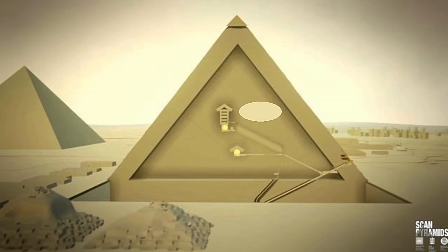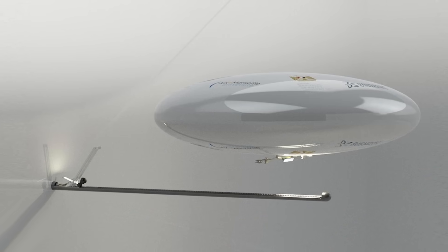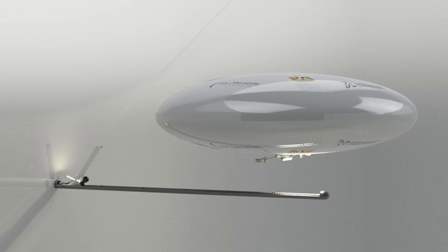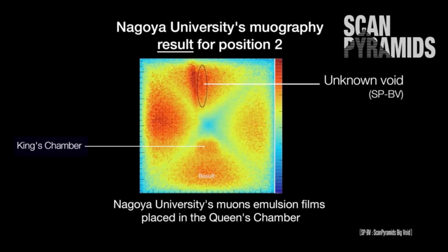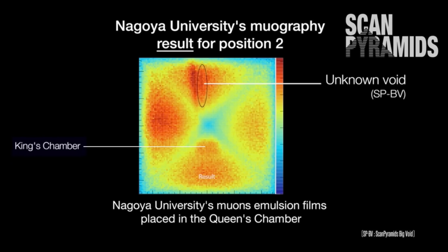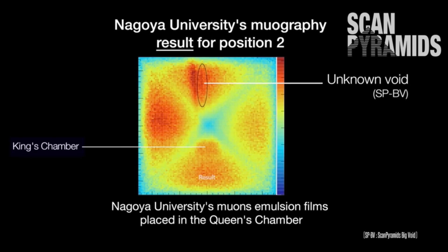Not long after the announcement of the big void, pictures of a new robotic blimp were released and this could be used to explore the void using an endoscopic camera. But now, nearly five years later, nothing has materialized. We still don't know what the voids are or what's inside.